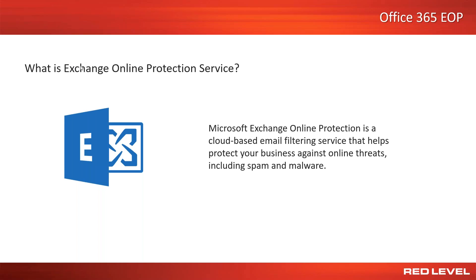Exchange Online Protection provides a number of convenient services. There's no software to install, and it's already built in for Office 365 subscribers. But for Exchange Hybrid and standalone environments, all that's needed is to point your MX records — the records that allow the internet to know how to reach you by email — to Exchange Online Protection and allow incoming messages from Exchange Online to your mail server.